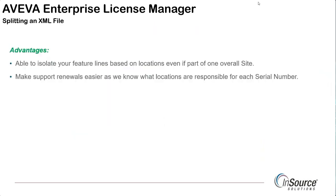We now have two license servers in charge of their respective locations. What are the advantages of doing this? We're able to isolate our feature lines based on location — even if they were originally part of a single XML file — so I know what feature lines are used for Plant One, Plant Two, Plant Three, Plant Four, and so on. This also makes renewals a little bit easier because we're able to manage them on their own, and if a certain product is not being used then maybe we can remove that from support at a later date if need be.